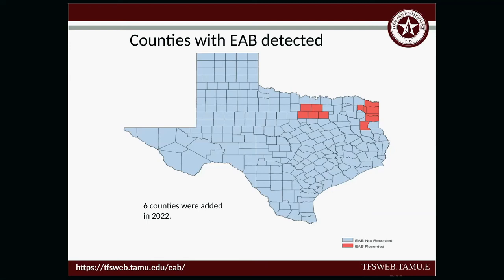This is our current map of counties where EAB has been detected — five counties in this area. We've added six counties this year. The Texas A&M Forest Service EAB website can be found by typing 'TFS TAMU' and 'EAB' into Google — it should be the first result.